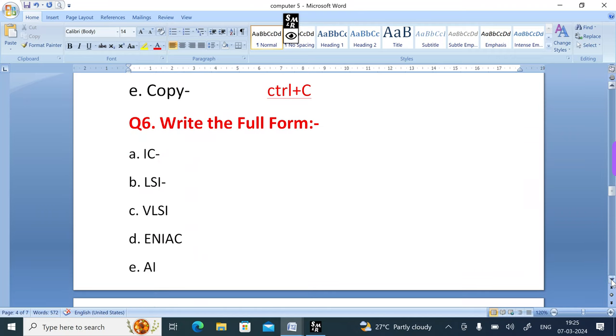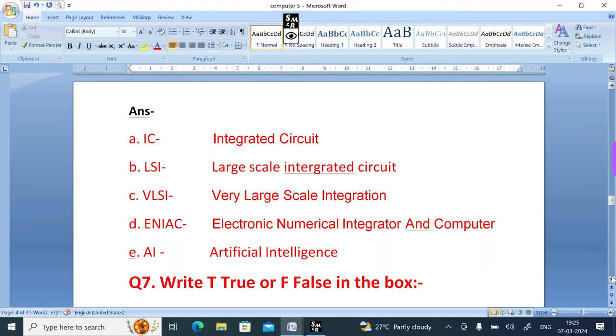Question number 6: Write the full form. ENIAC is Electronic Numerical Integrator And Computer, and AI is Artificial Intelligence.